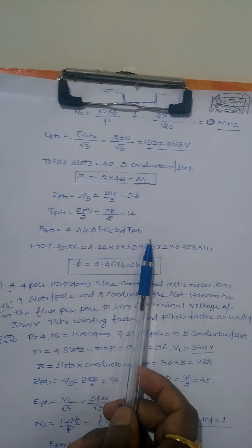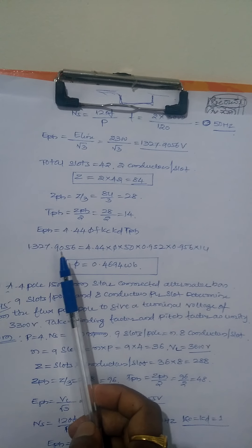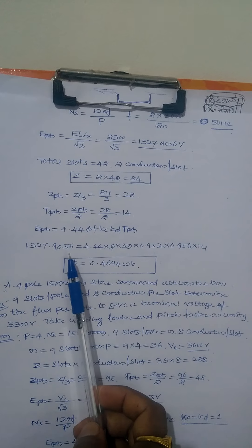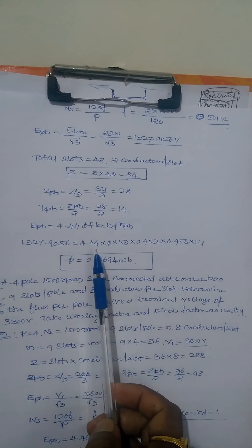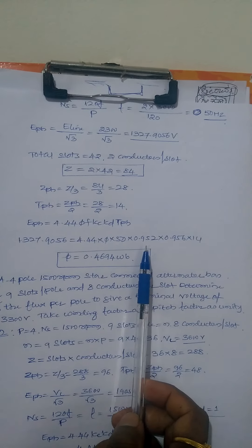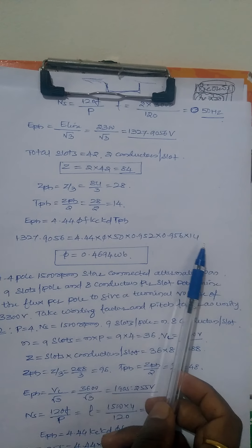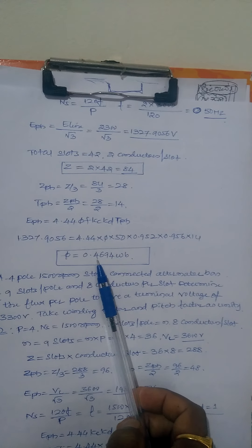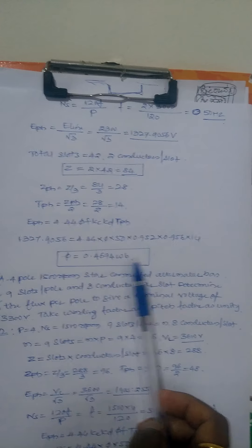E phase equals 4.44 times frequency times flux times KC times KD times T phase. E phase is already given as 1327.9056. Substituting values: 1327.9056 equals 4.44 times 50 times flux times 0.956 times 0.952 times 14. Solving for flux, the flux is 0.0469 weber.